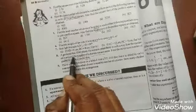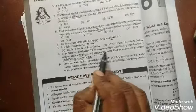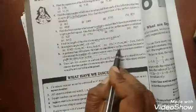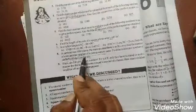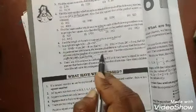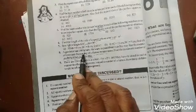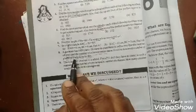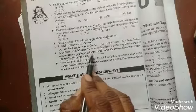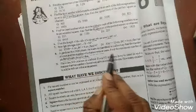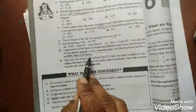One gardener, he has 1000 plants. He wants to plant these in such a way, number of rows and columns equal. Find the minimum number of plants he needs more for this.